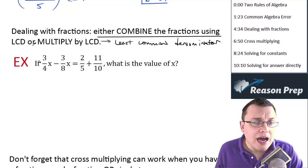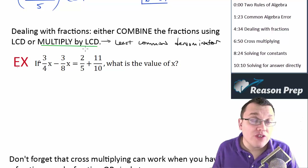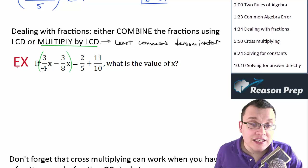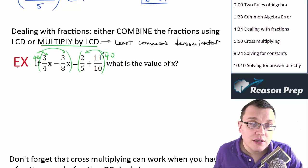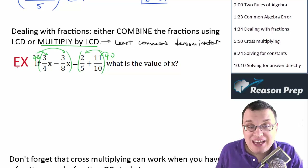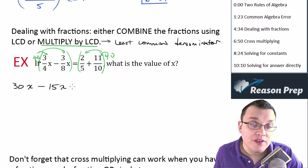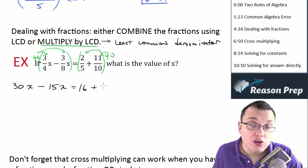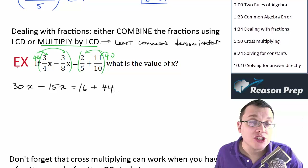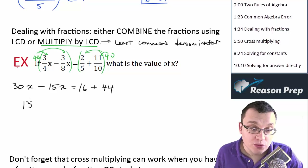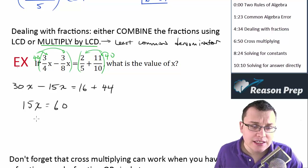I generally prefer multiplying both sides of the equation by the LCD. The LCD is 40, so I multiply both sides by 40, meaning each term gets multiplied by 40. For (3/4)x: the 4 cancels into 40 leaving 10, and 10 times 3 is 30x. For (3/8)x: 8 goes into 40 leaving 5, and 5 times 3 is 15x. For (2/5): 5 goes into 40 leaving 8, and 8 times 2 is 16. For (11/10): 10 goes into 40 leaving 4, and 4 times 11 is 44. This turns our equation with fractional coefficients into one with integer coefficients — much easier to solve. We get 15x equals 60, divide both sides by 15, and x equals 4.